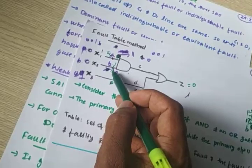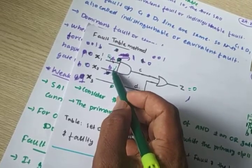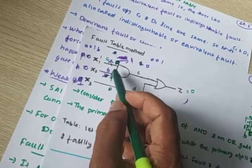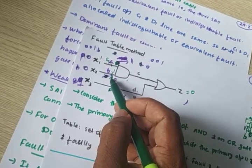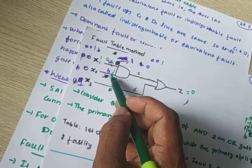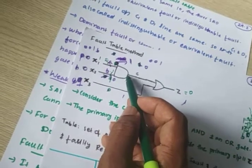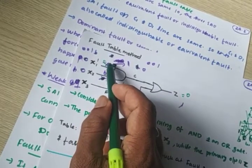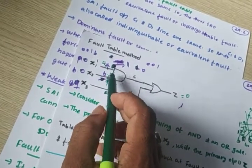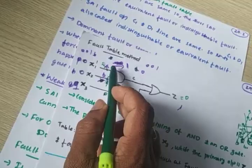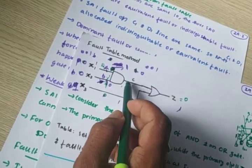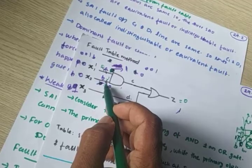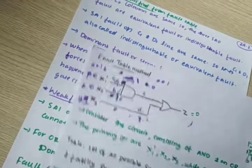If B1 is stuck-at-1, the output still depends on the other input. It cannot change the output by itself — it depends on the other input. So B1 stuck-at-1 is weak on the AND gate. Because stuck-at-1 alone cannot control the output; the output still depends on the other input. So this is called weak fault.